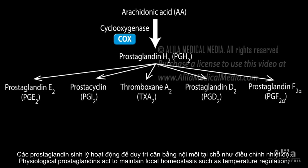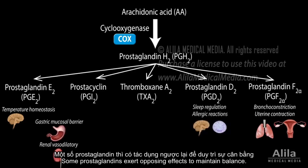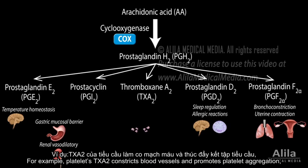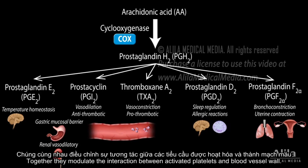Physiological prostaglandins act to maintain local homeostasis such as temperature regulation, bronchial tone, uterine tone, and gastric mucosal barrier, among others. Some prostaglandins exert opposing effects to maintain balance. For example, platelet TXA2 constricts blood vessels and promotes platelet aggregation, while endothelial PGI2 dilates blood vessels and inhibits platelet aggregation. Together, they modulate the interaction between activated platelets and the blood vessel wall.